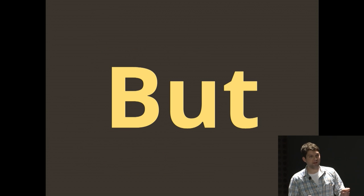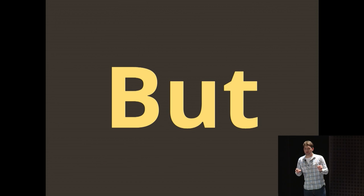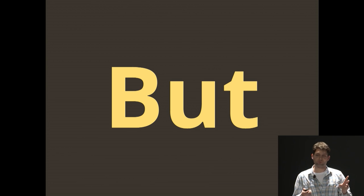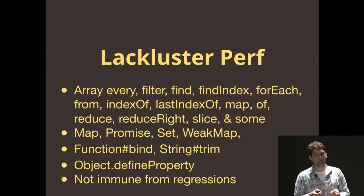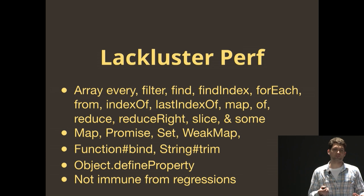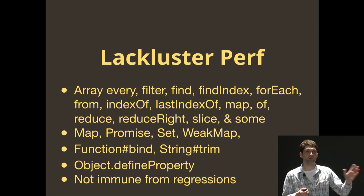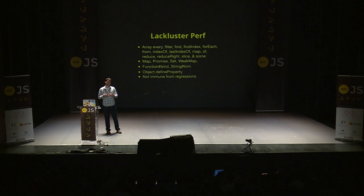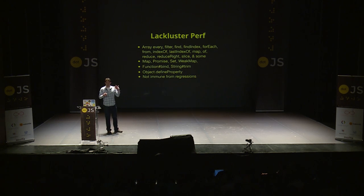But — and that's a big but — there are some issues, and it's not just one or two, it's several. The first is lackluster performance. Before ES5 even existed, going on 10 years now, these methods have existed in JavaScript engines in some form or another, and then they became standardized. For as long as they've existed, every filter, forEach, indexOf have always been slower than simplified alternatives written in your own library code.